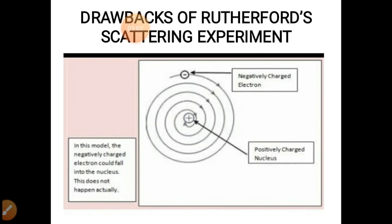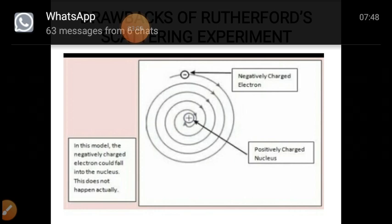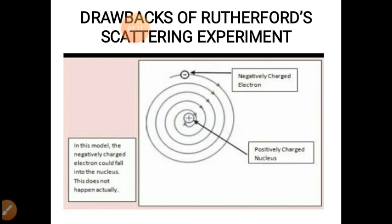Thus, Rutherford's model could not explain the stability of atom. Secondly, Rutherford proposed that electrons revolve around the nucleus in fixed orbits. However, he did not specify the orbits and the number of electrons in each orbit.